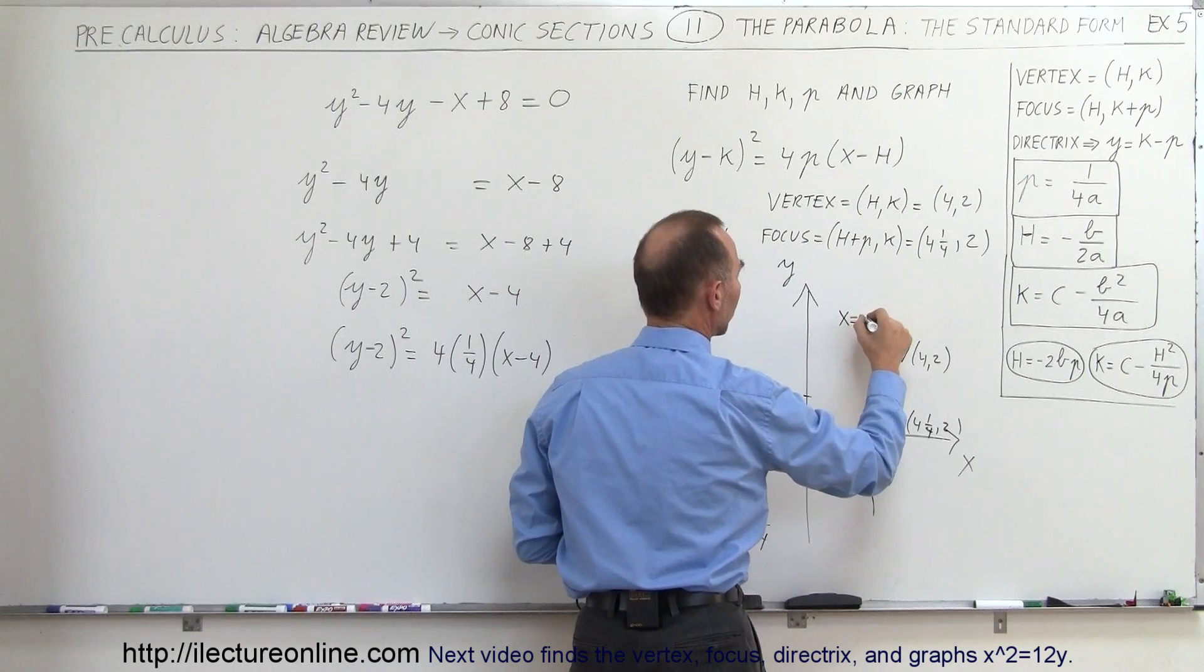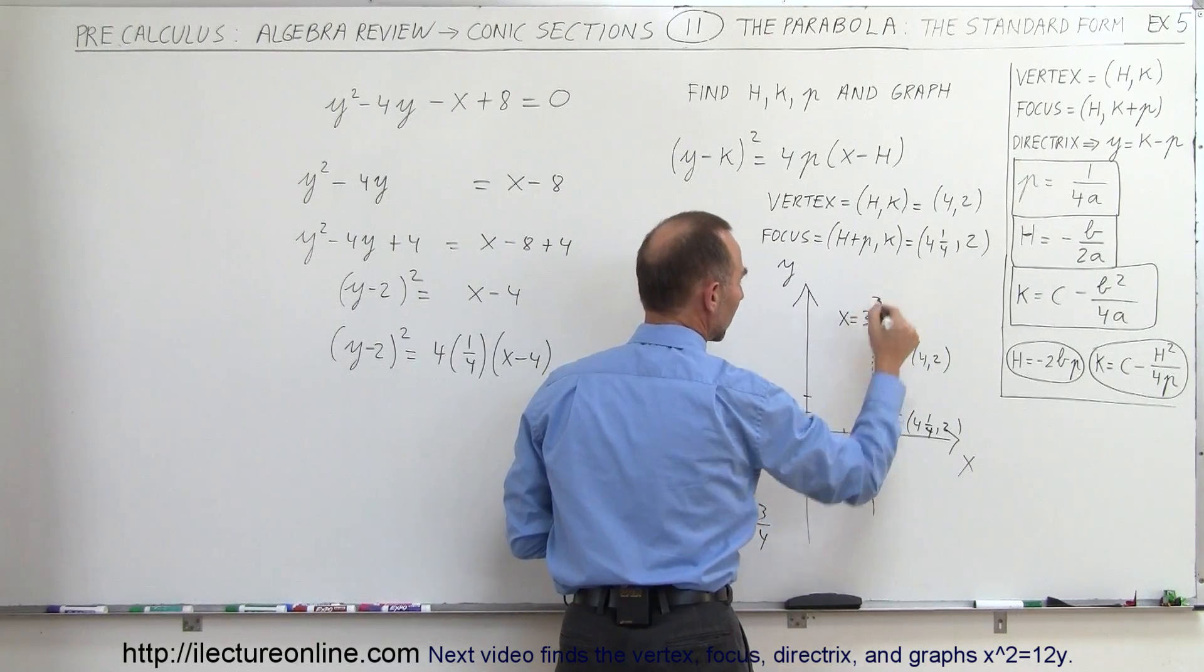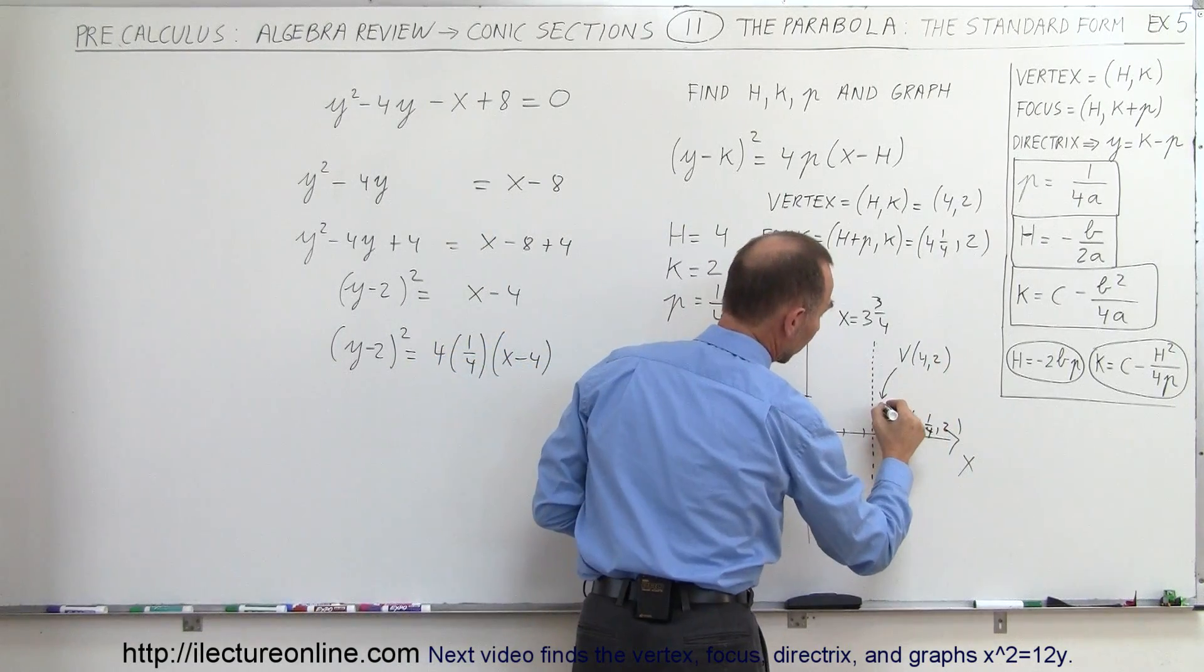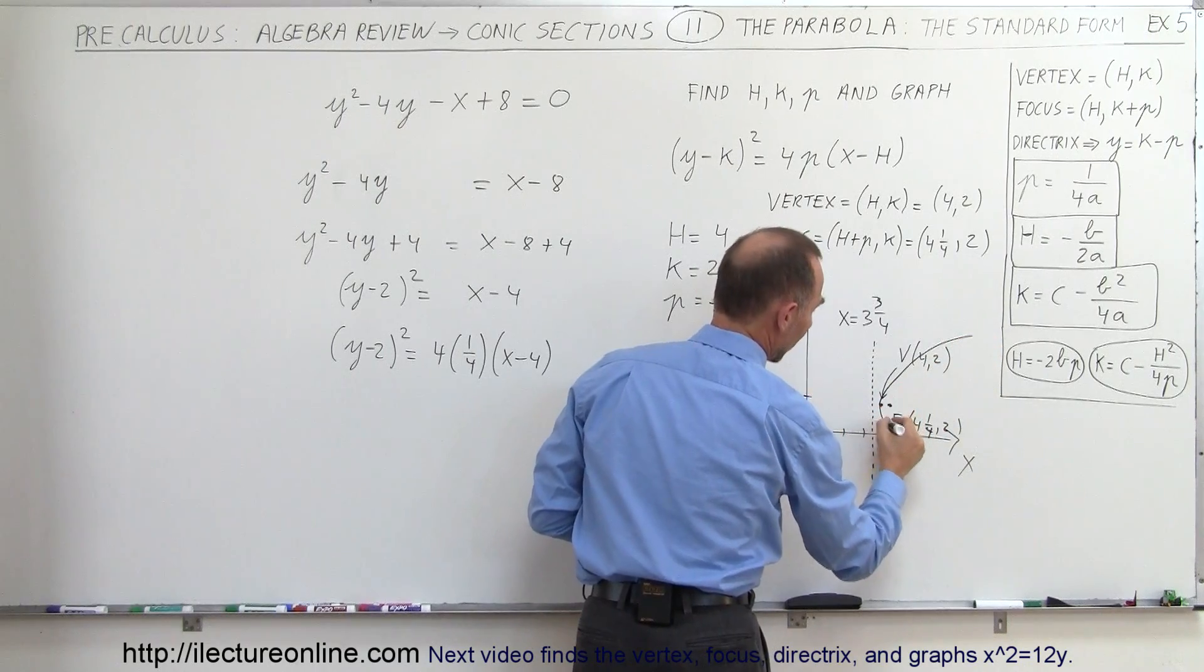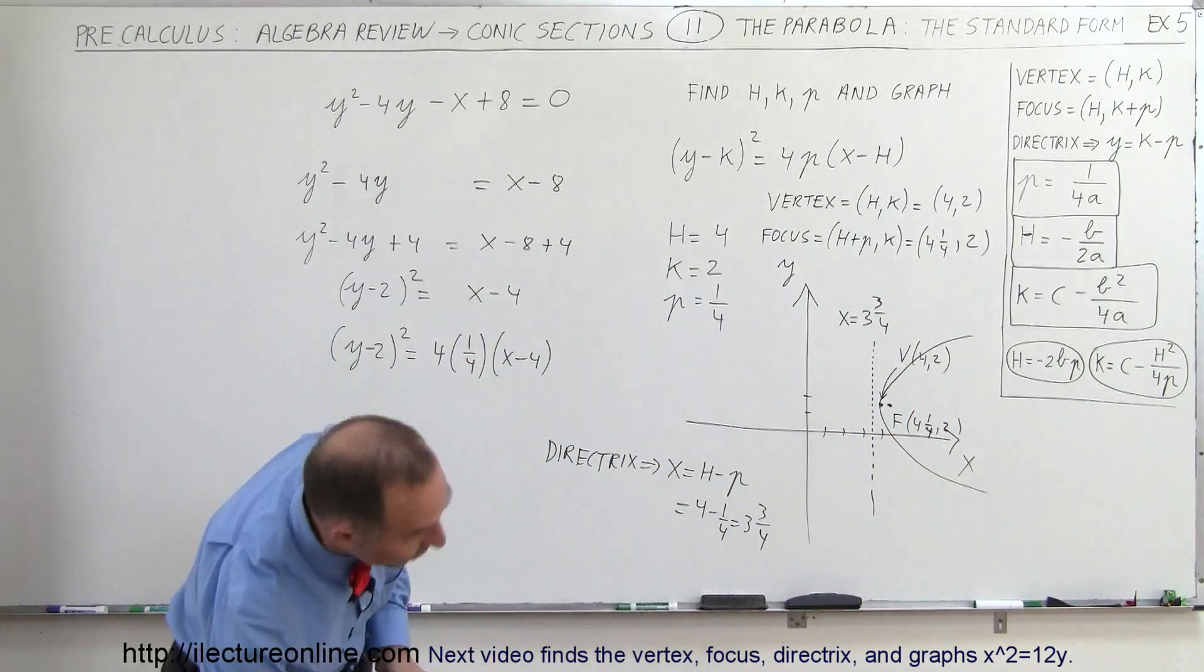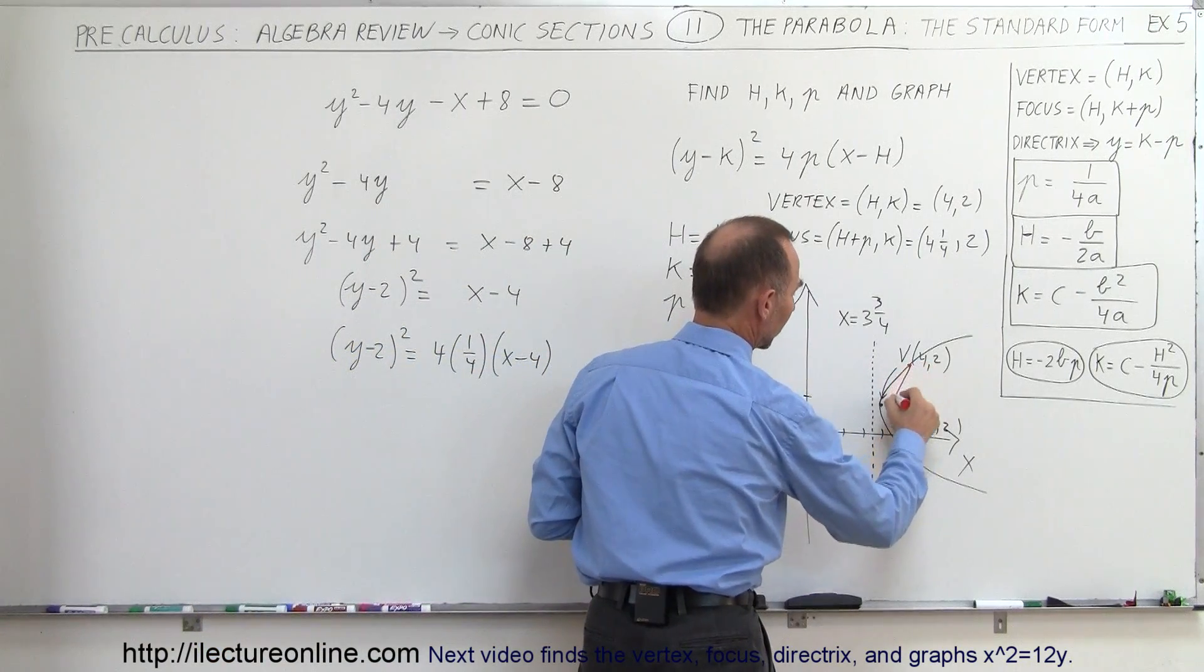And the equation x equals 3 and 3 quarters like that. Okay, so now you can see that the parabola will open to the right. There's my vertex, so the parabola will open like this and like this again in such a way that every point on the parabola will be equal distance away from the focus as it will be from the directrix.